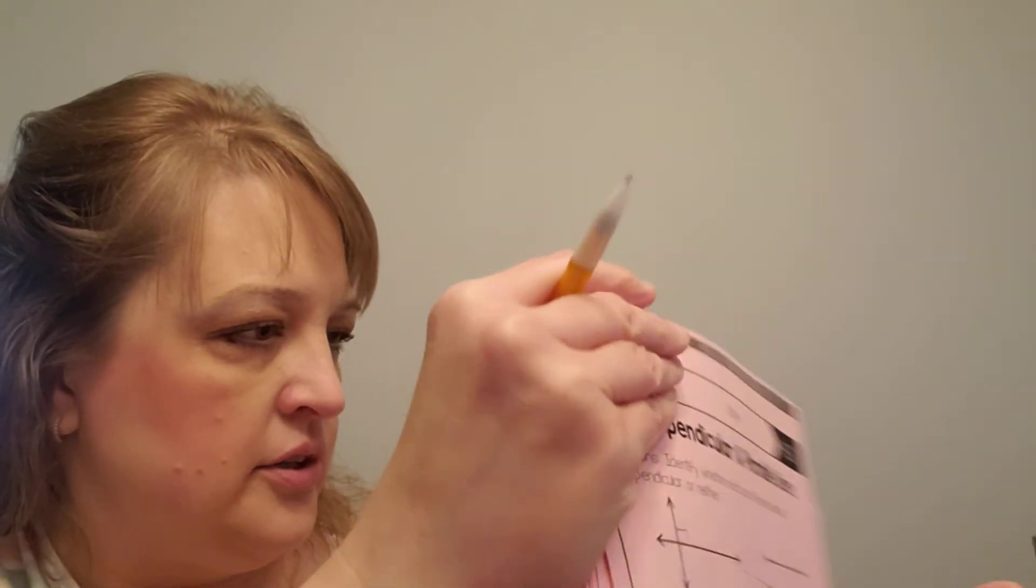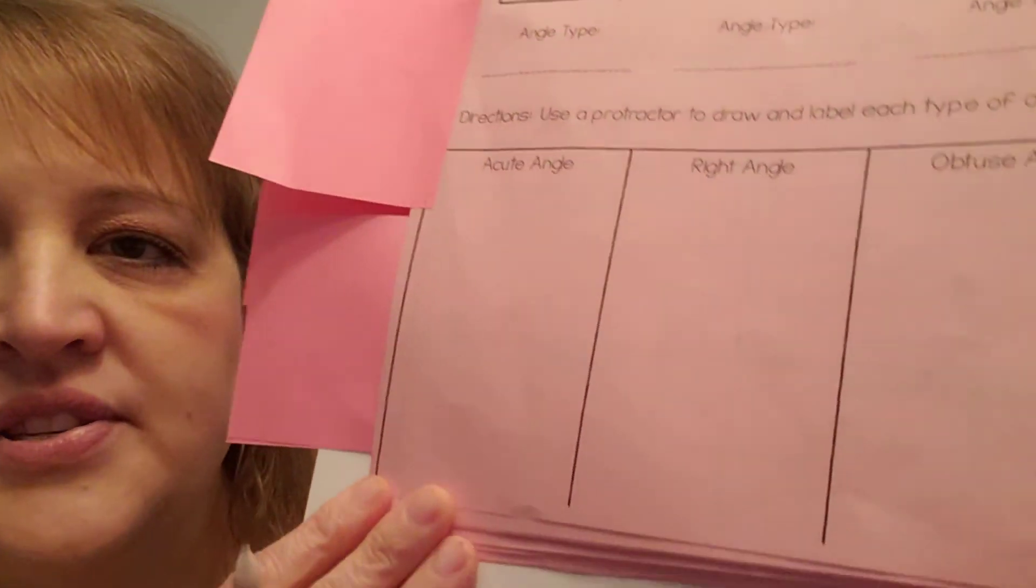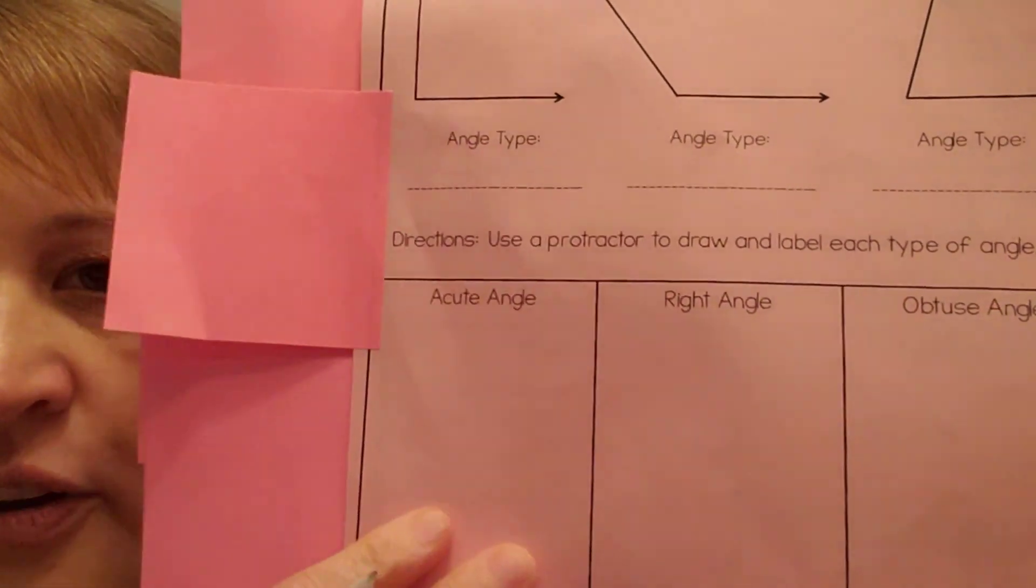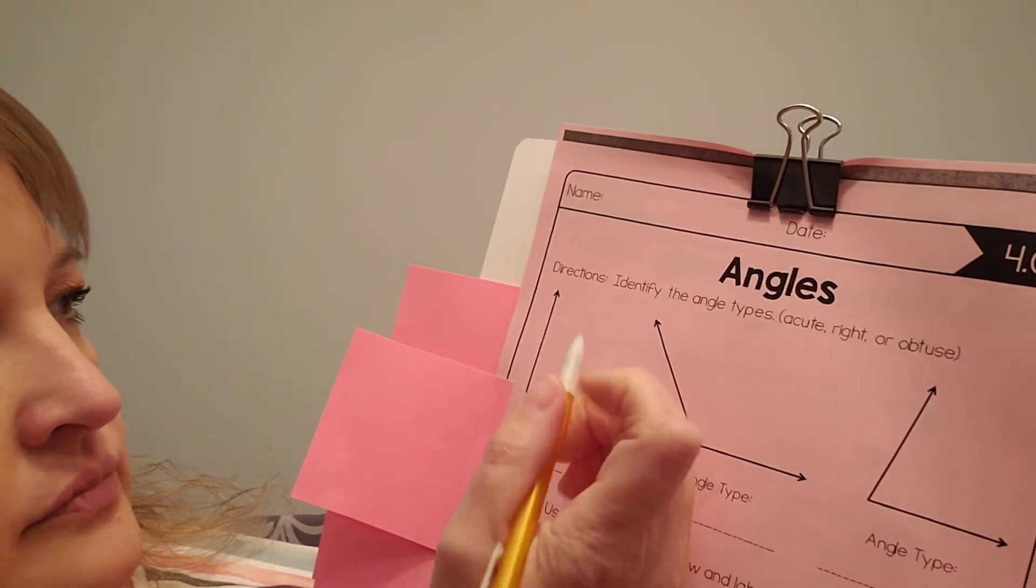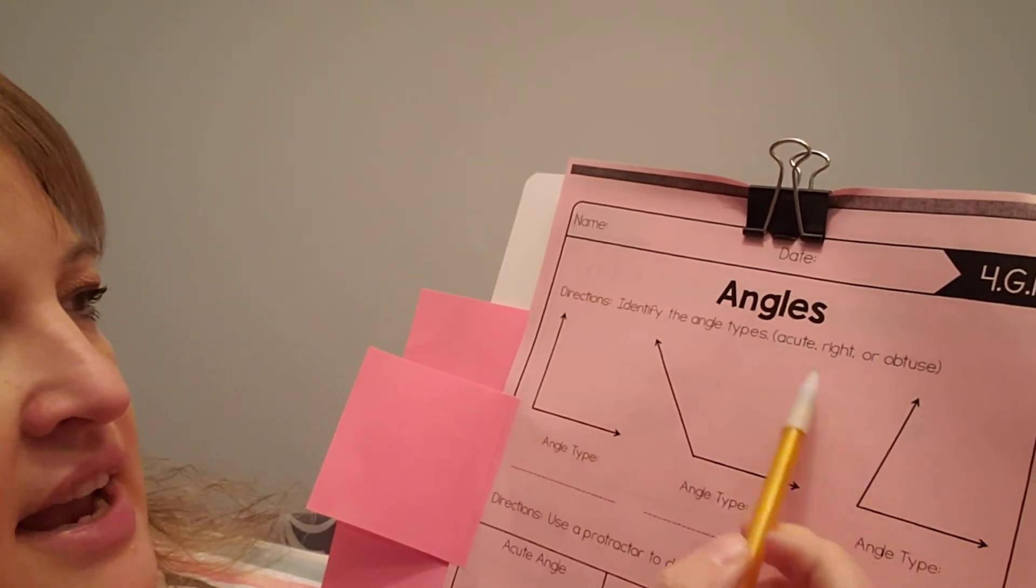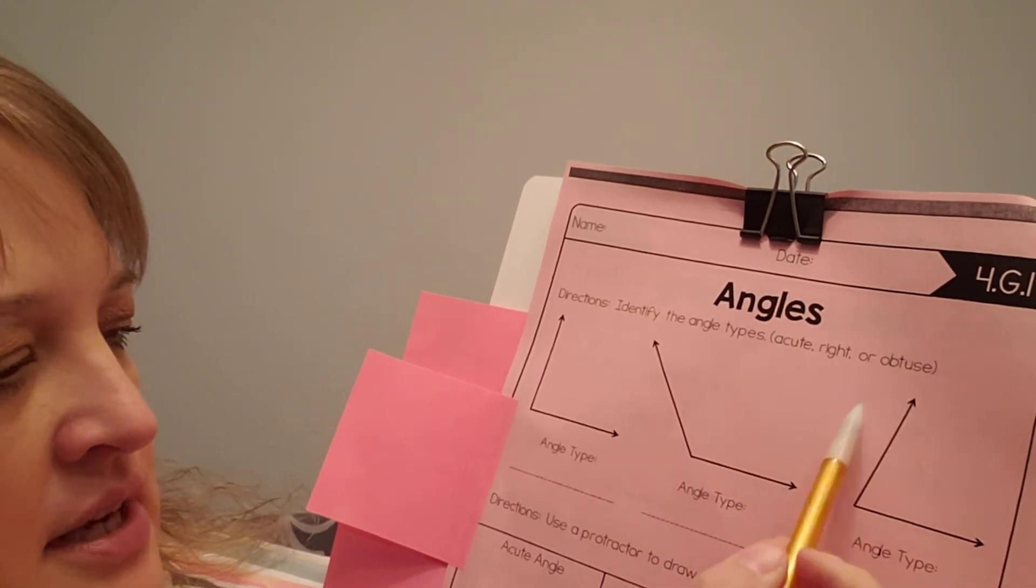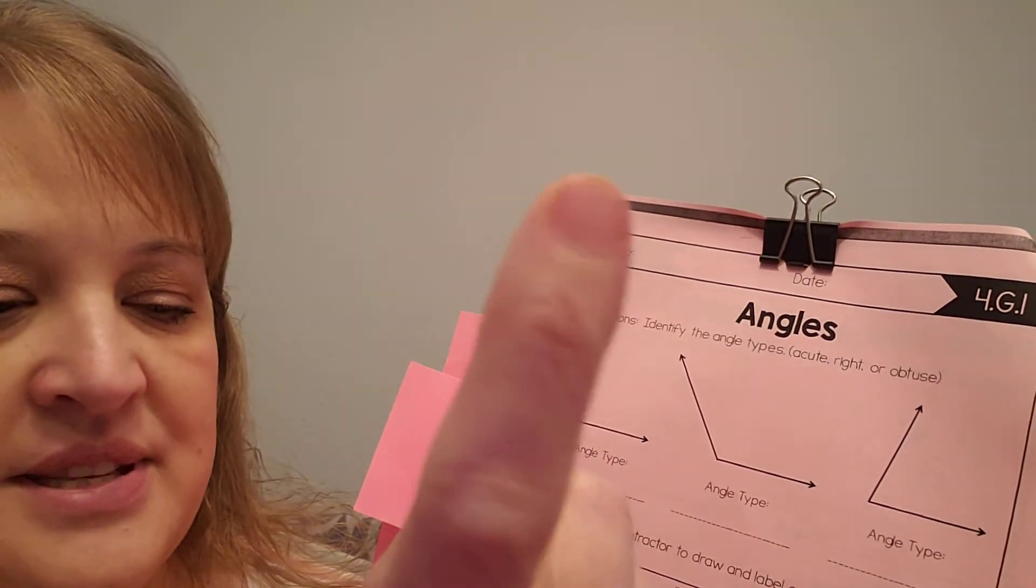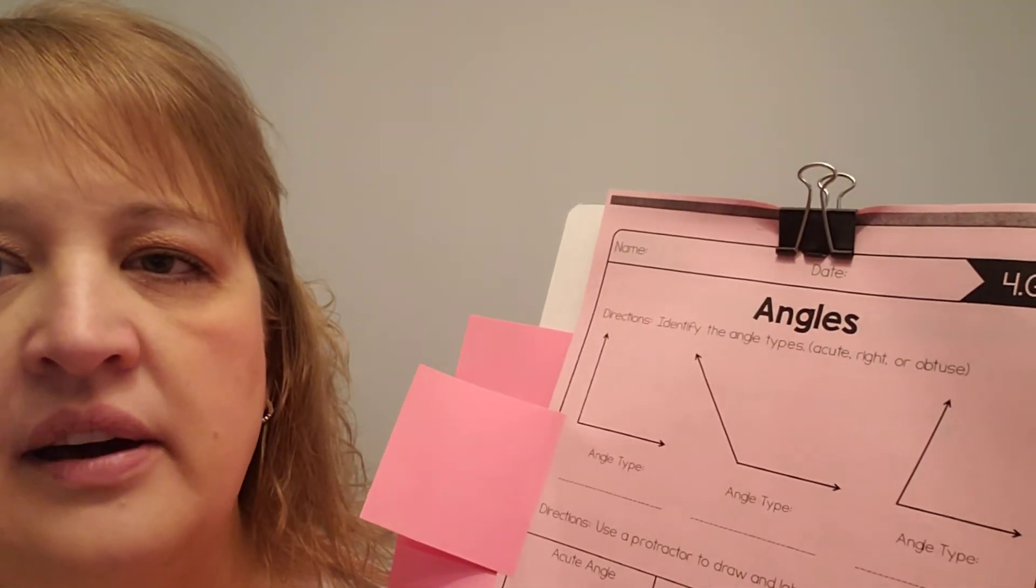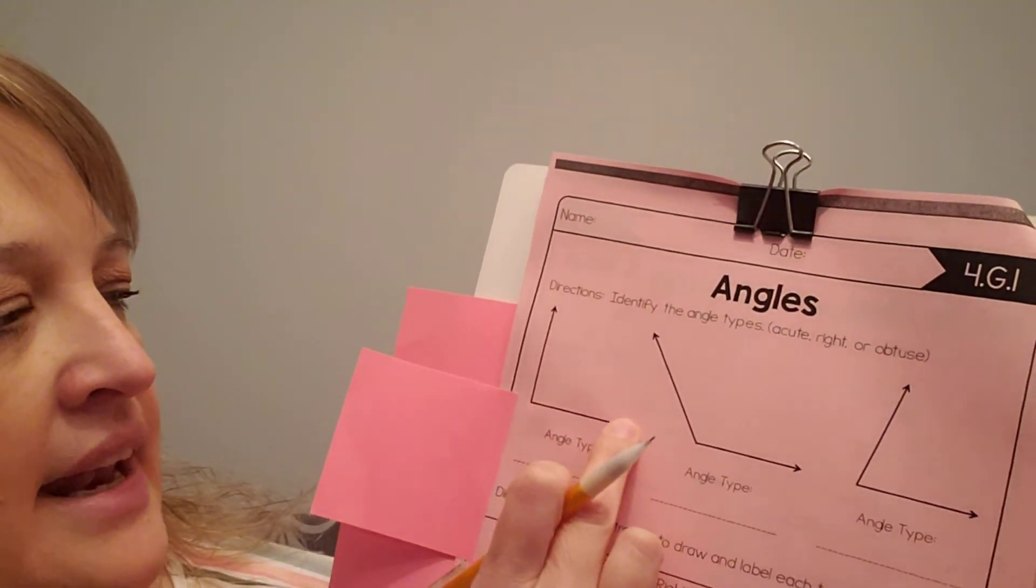All right. Next page is angles. Now, most of you probably do not have a protractor at your house. So we're going to do the best we can without a protractor. You're not going to be able to do it exactly. But we're going to be able to do okay. So we're going to identify these types of triangles, acute, right, or obtuse. And then down here, it says to use a protractor to draw and label each type of angle. We're not going to be able to label it completely. But I'm going to show you how you can do it without a protractor. All right. So what kind of angle is this? It forms a perfect square in the corner. This is a right angle.